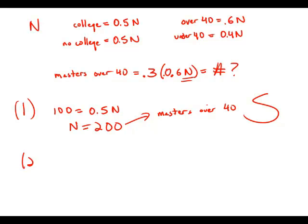Now forget about statement number one. Focusing on statement number two, this tells us of the employees 40 years or less, 25% have master's degrees. So 0.25 times this 0.4n, the folks who are under 40, and these are the folks with master's degrees at age 40 or under.